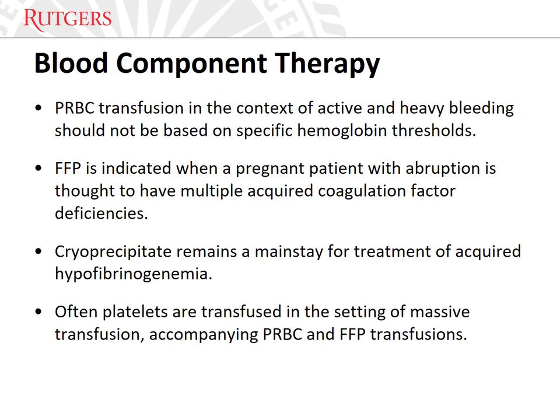Fresh frozen plasma contains all coagulation factors and fibrinogen, and its use is indicated when a pregnant patient with abruption is thought to have multiple acquired coagulation factor deficiencies, such as in cases of obstetrical hemorrhage treated with massive transfusion and in cases of DIC. Cryoprecipitate is a plasma-derived product that contains fibrinogen and other coagulation factors, including factor VIII, factor XIII, and von Willebrand factor, and remains a mainstay for treatment of acquired hypofibrinogenemia. Cryo should be administered to ensure fibrinogen levels greater than 50 to 100 milligrams per deciliter. In the context of active bleeding, platelets should be transfused to a goal of greater than 50,000 per cc, often in the setting of massive transfusion alongside red blood cells and FFP.